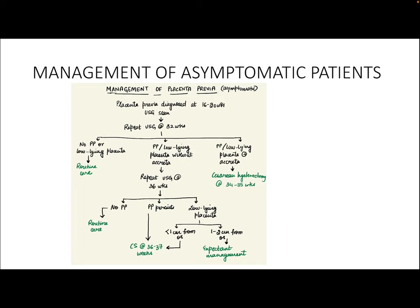For asymptomatic patients diagnosed with placenta previa at the 16 to 20 week ultrasound, repeat an ultrasound at 32 weeks to see if the placenta has regressed. If at 32 weeks there is no placenta previa or low-lying placenta, continue routine prenatal care. If there is placenta previa or low-lying placenta without any placenta accreta spectrum, repeat an ultrasound at 36 weeks. If there is no placenta previa at 36 weeks, continue routine care. If placenta previa persists at 36 weeks, schedule cesarean at 36 to 37 weeks.